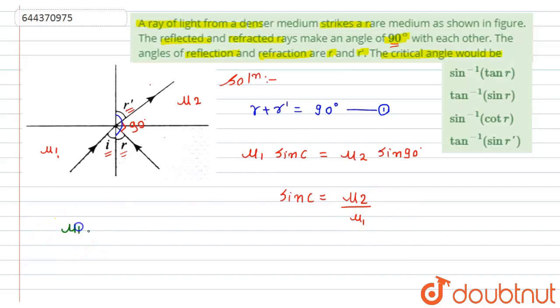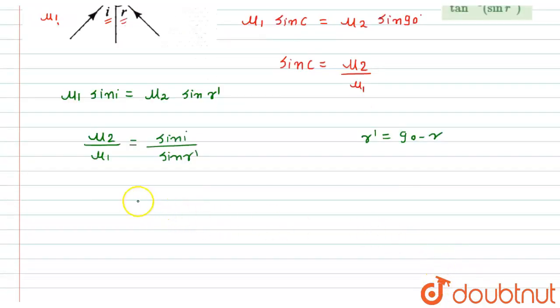μ₁ sine i equals μ₂ sine r dash. So from here the ratio of μ₂ by μ₁ will become equals to sine i upon sine r dash. Now from equation number one I can write r dash equals 90 minus r. So if we replace the value of r dash by this, it will become sine i upon sine of (90 minus r).